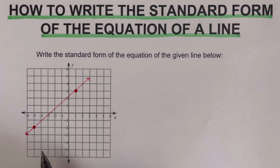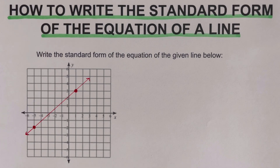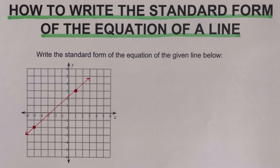In order to write the standard form of this line, we need to come up with the slope-intercept form first, and then change that slope-intercept form to its equivalent standard form. So let's review what the standard form of a line is and what the slope-intercept form of a line is.